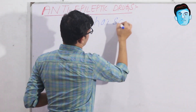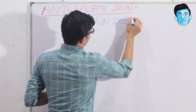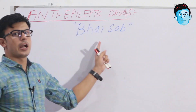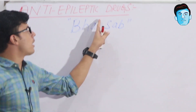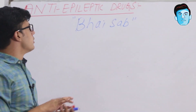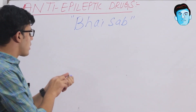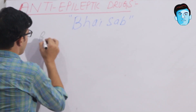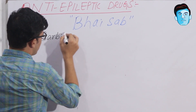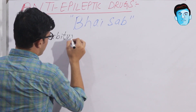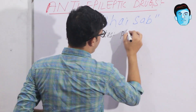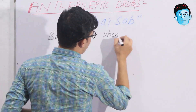For the anti-epileptic drugs we have a quite funny mnemonic, that is BY SAAB, where every single alphabet indicates a particular drug class. B stands for the barbiturates, and in this class we have phenobarbitone.